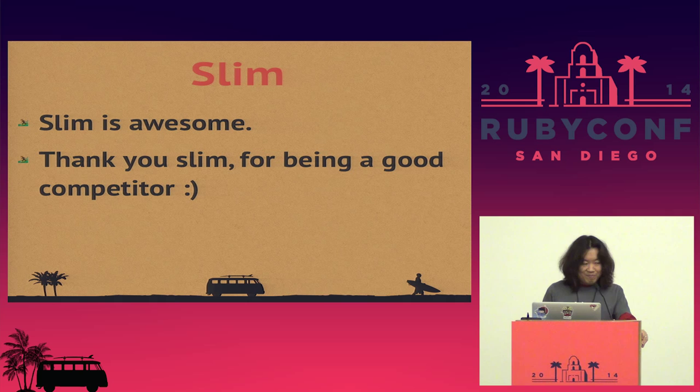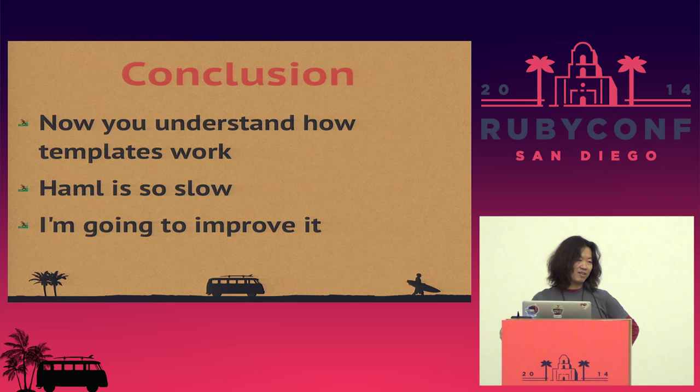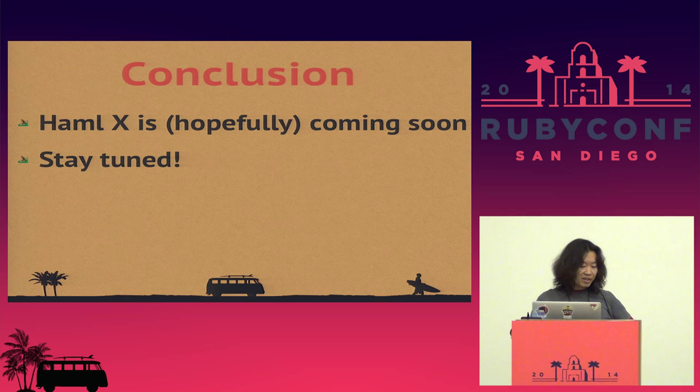This is the end of my talk. Conclusion: now you understand how ERB, Erubis, and Haml work. Yes, Haml is slow, and I'm going to improve Haml. My version called Haml X is hopefully coming soon, so please stay tuned. That's it — thank you very much.